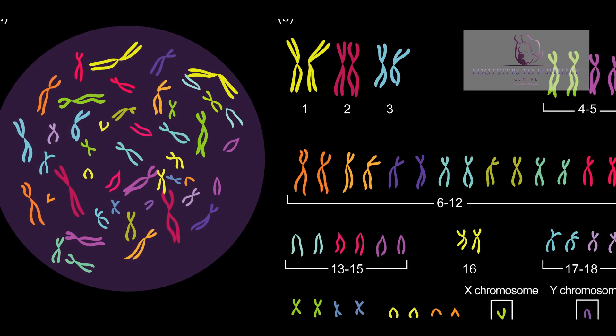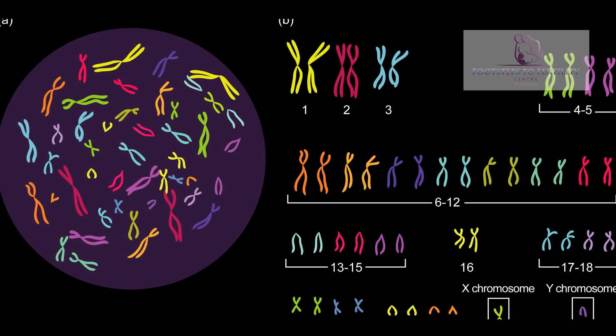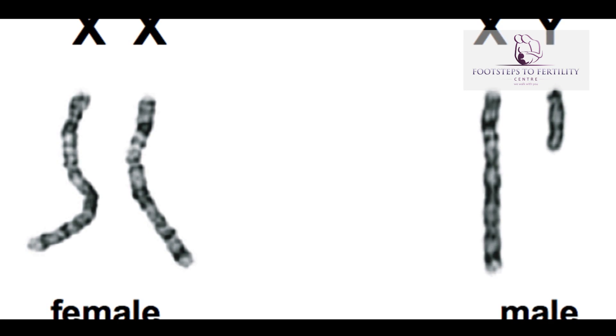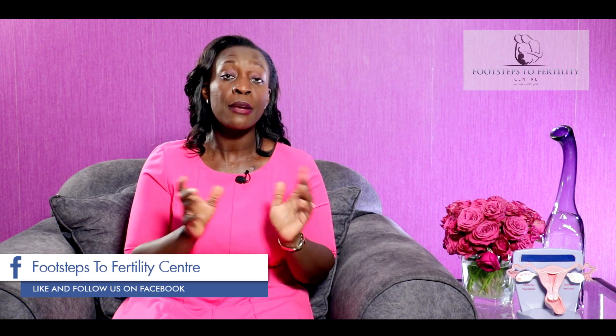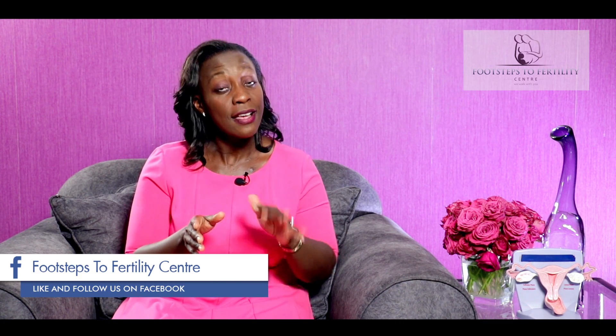Every human being has 46 chromosomes, and there are sex chromosomes which are either X or Y. From these chromosomes, we get 23 from our mother and 23 from our father. And the determination of X and Y depends on the man. Men have sperm that can either have an X chromosome or a Y chromosome, whereas women only have X chromosomes. So women are 46 XX and males are 46 XY.